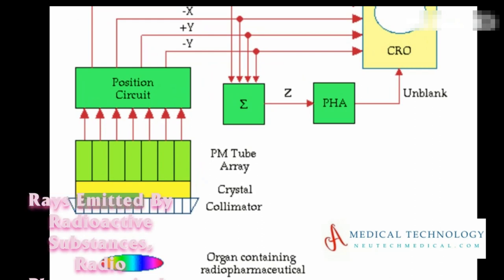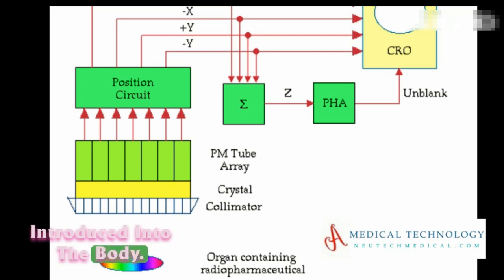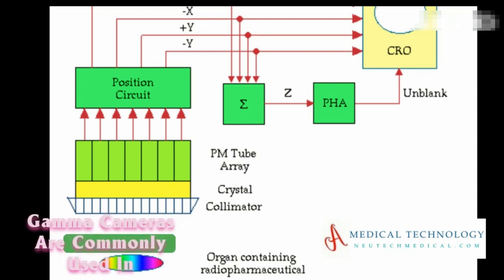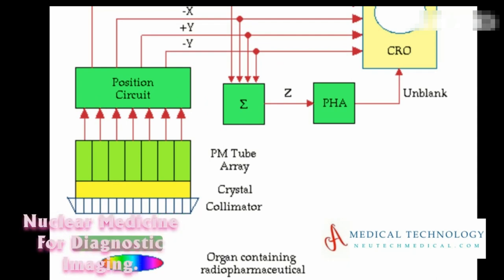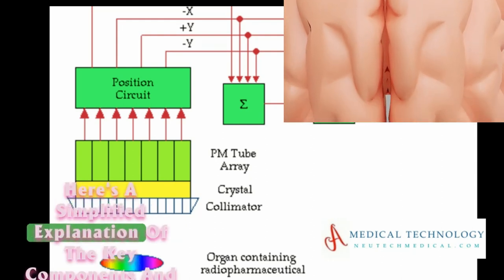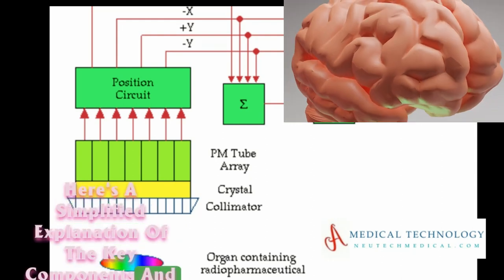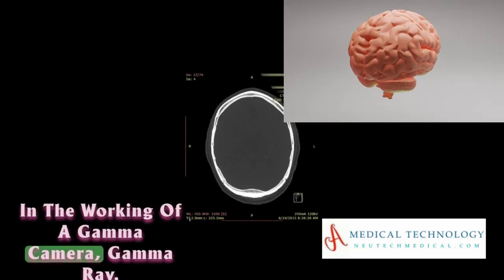The working principle of a gamma camera involves the detection and imaging of gamma rays emitted by radioactive substances (radiopharmaceuticals) introduced into the body. Gamma cameras are commonly used in nuclear medicine for diagnostic imaging.